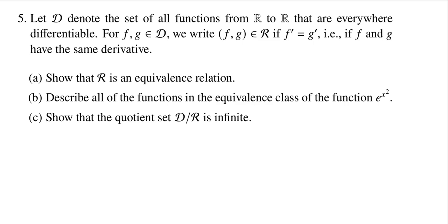In this problem, D denotes the set of all functions from the reals to the reals that are everywhere differentiable. Functions like sine of x — it's a function on the reals to the reals and you can differentiate sine for all x — e to the x, and any polynomial are good examples. If you have two functions that are differentiable everywhere, we say they're related — write (f, g) ∈ R — if they have the same derivative, i.e., f prime equals g prime.